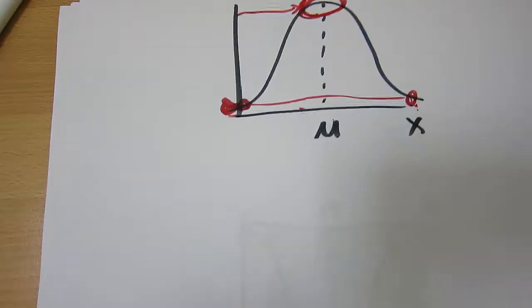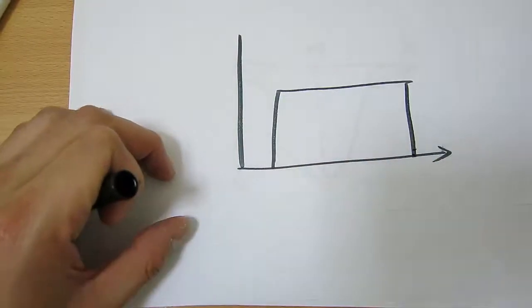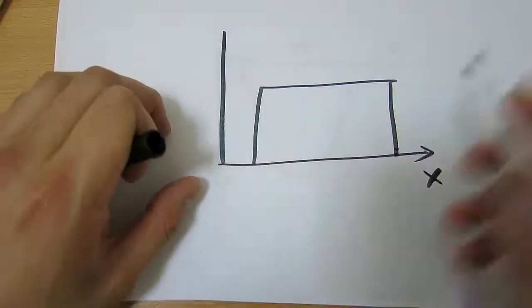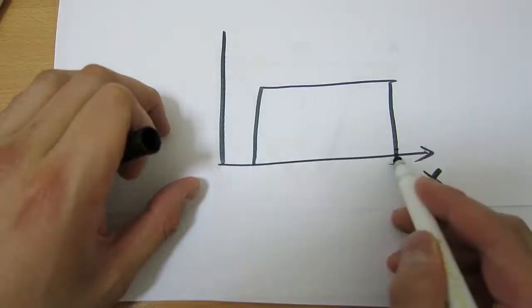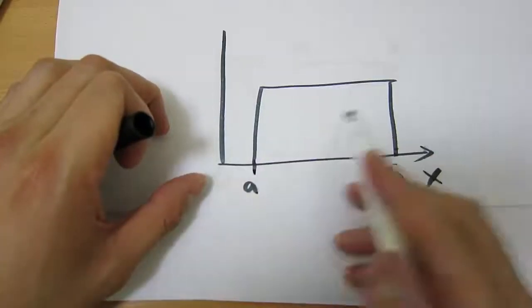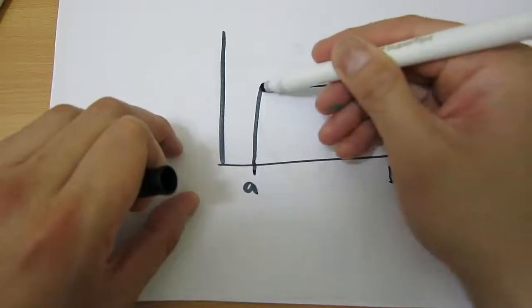Now what does this mean for the uniform distribution? Well, the uniform distribution is unique because it looks like a rectangle. It basically is a rectangle. Now what this means is that for any of these x-values that occur within this particular band, we'll call it A and B, if we look at their probabilities or their likelihood of occurring, they're all the same.